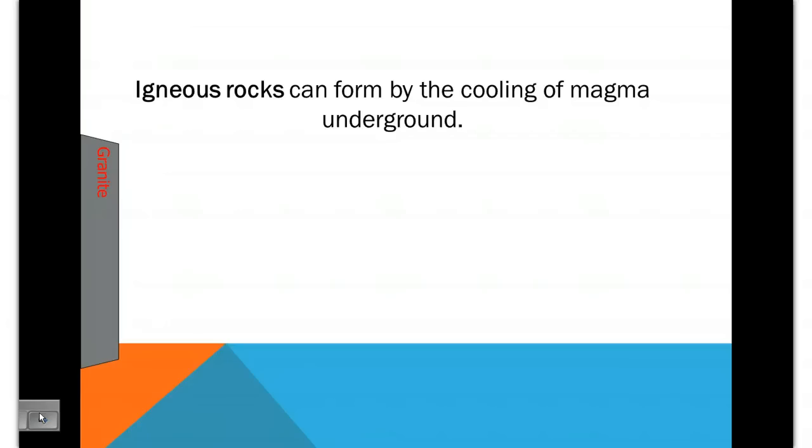Igneous rocks form underground with high heat and pressure. We talked about how magma is liquid rock underground. And when intrusive rocks cool underground, they cool really slowly and they cool inside the earth.